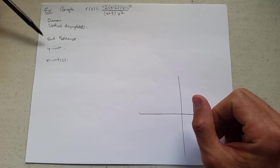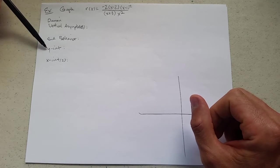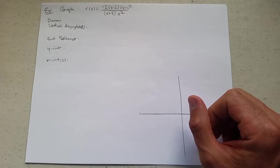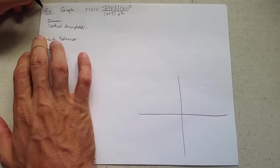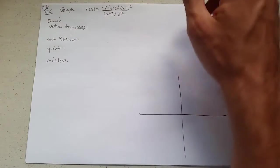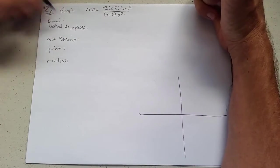So now we know about vertical asymptotes and behavior. We've known about y-intercepts and x-intercepts for a while. And we're going to graph this rational function. So this is section 4.2, and we're going to be graphing.